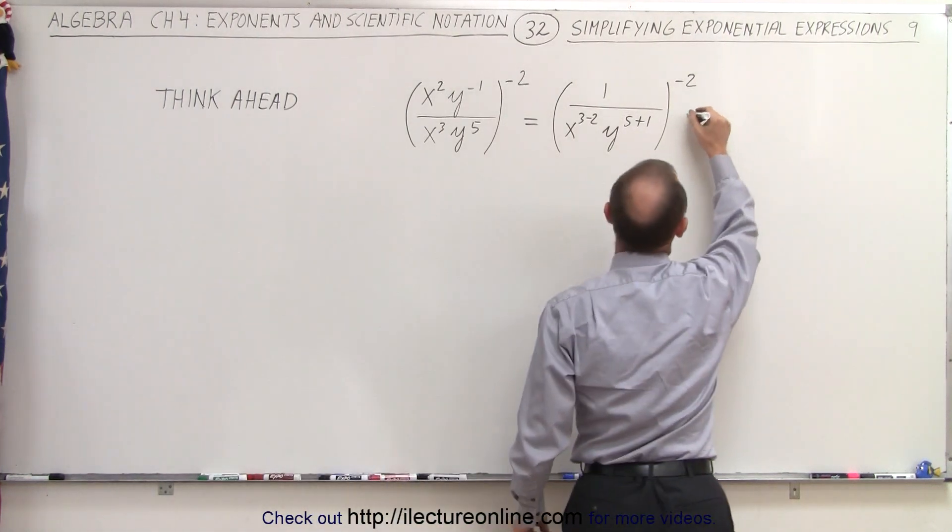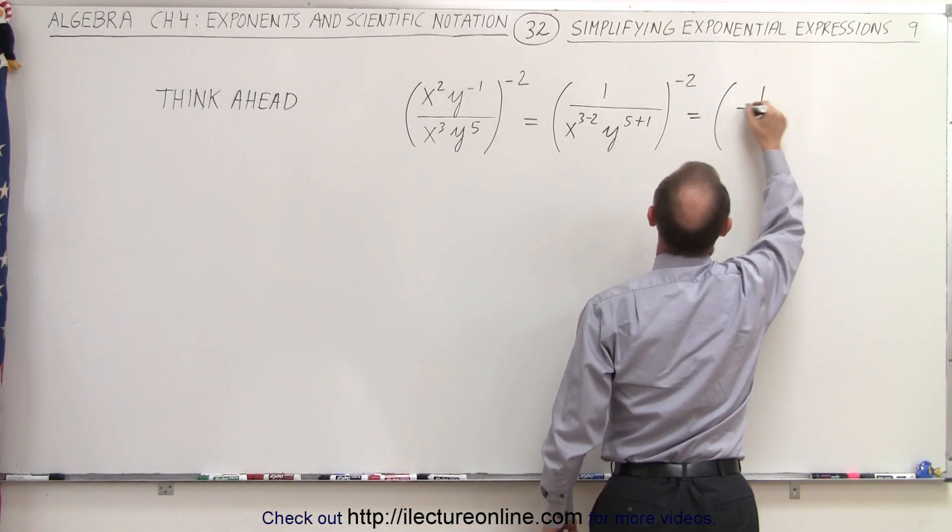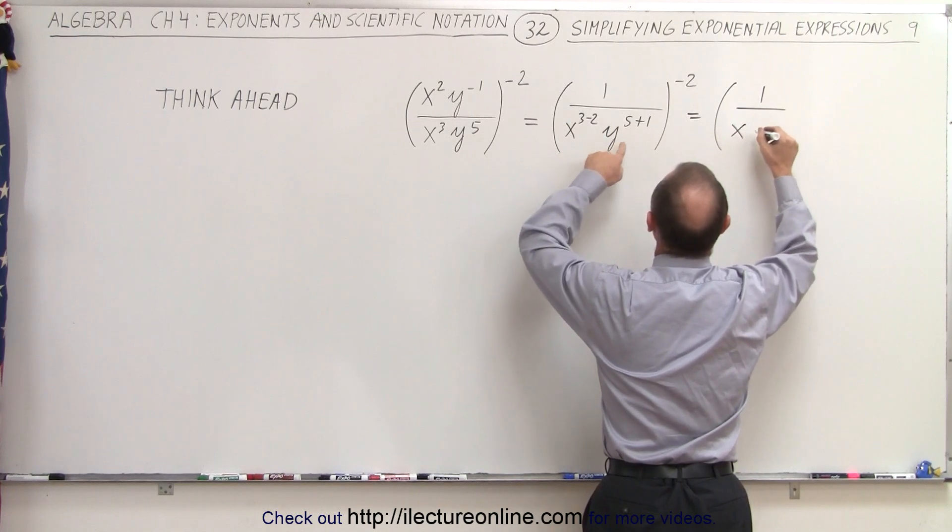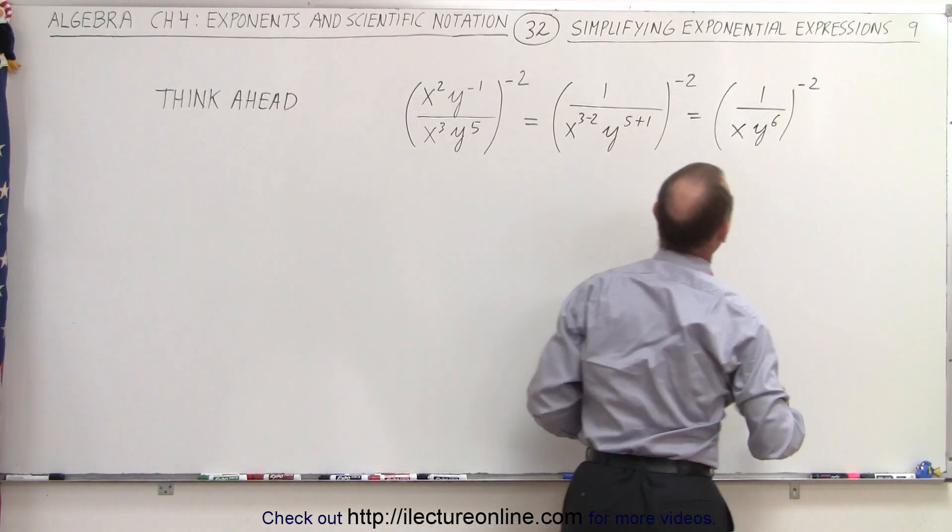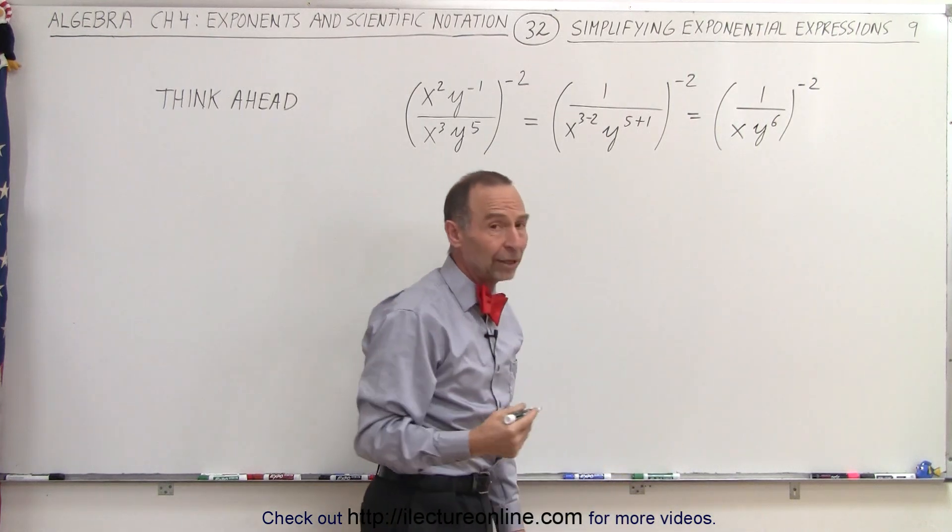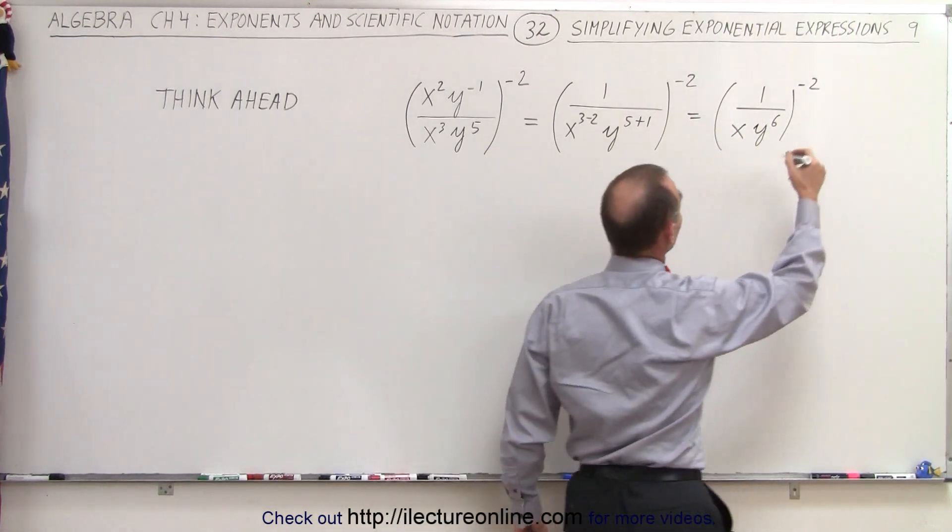At this point, this simplifies to 1 over x to the first power and y to the sixth power, all raised to the negative 2 power. Then you realize you can quickly turn that into a positive by moving that up.